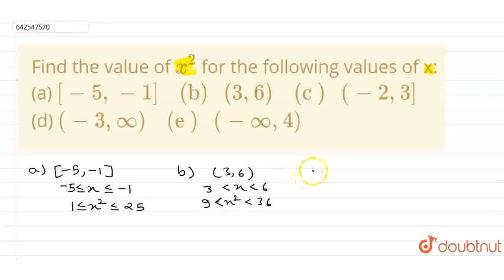And similarly, in c part, here it is given minus 2 to 3. So here I write minus 2 to 3. If I write here x, so it is from minus 2 to 3, because here it is closed bracket, so I can write here equal to also. It is open, so I leave it like this. So on squaring, I can write here 4 to 9. So the value of x square for this given expression is 4 to 9.